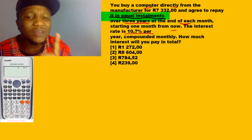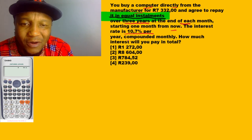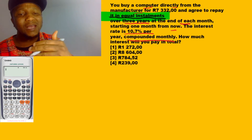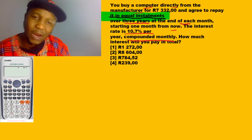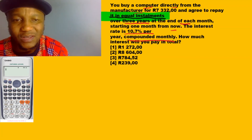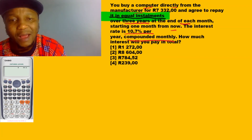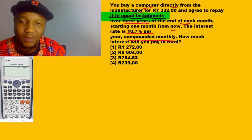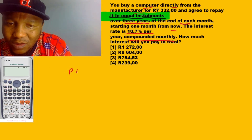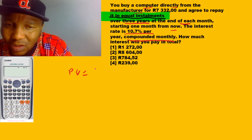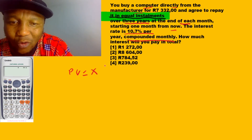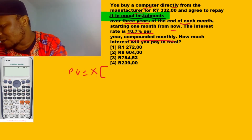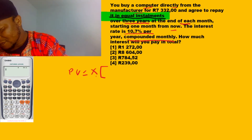You have money with you and you will pay at the end of each month — starting one month from now. The interest rate is given and it's compounded monthly. There are 12 months in one year. So I know I'm going to use the present value formula. I'm going to say: present value equals X, where X represents the regular equal payment.